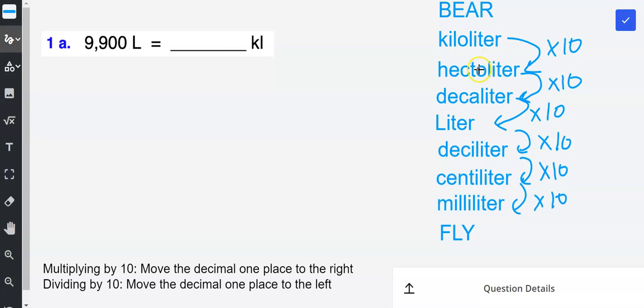Now on this conversion chart if I were moving fly to bear, the rhyme we remembered is you share which means you divide. So to go from a milliliter to a centiliter I would divide by ten. So for every jump I am dividing by ten.